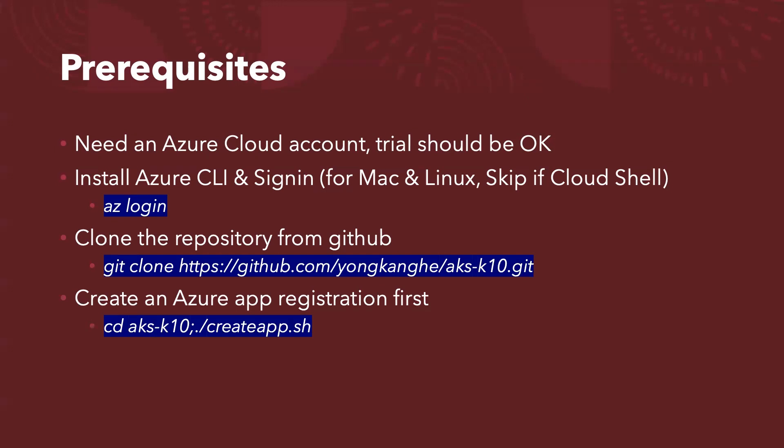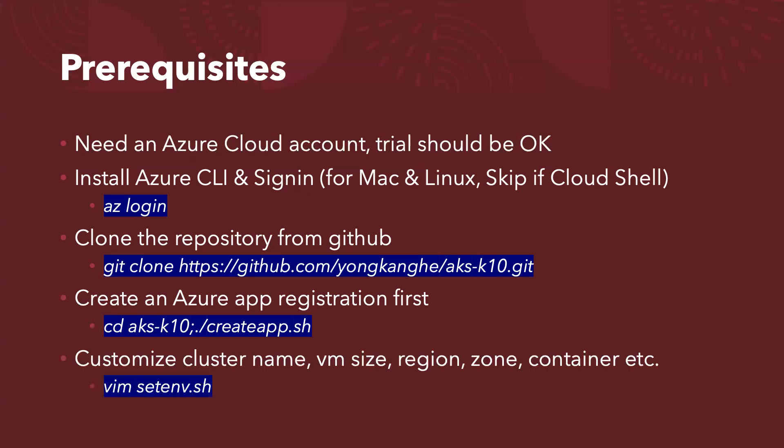What we are going to create here is an Azure app registration. We're going to use these credentials to run the installation of the custom K10 — to give the backup software the permissions to take snapshots and then to move the snapshot to Azure Blob Storage. And optionally, you can customize the cluster name, the VM size, the region or location, and also the container name by editing the set environment file.